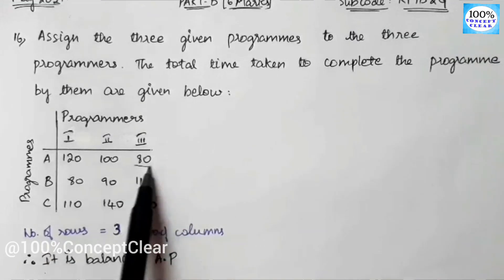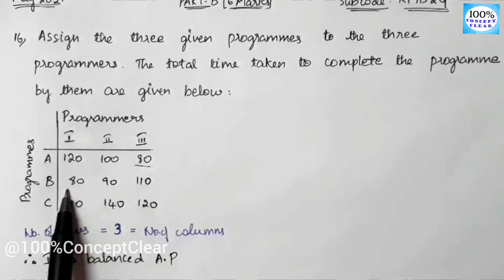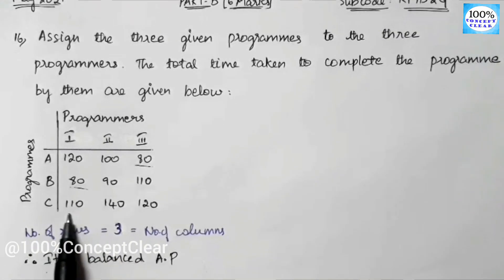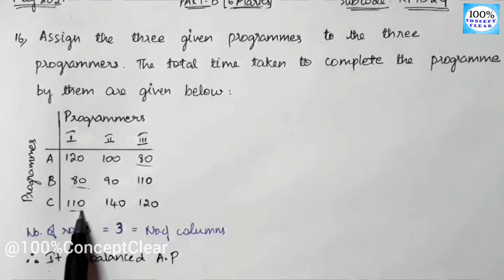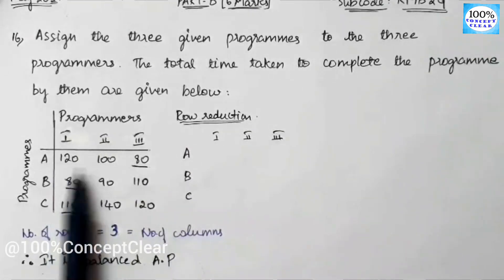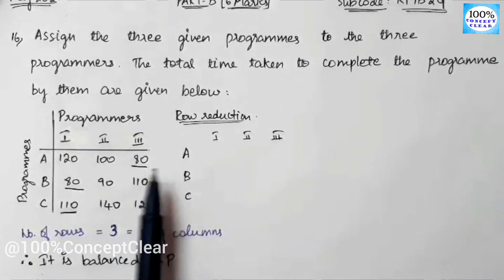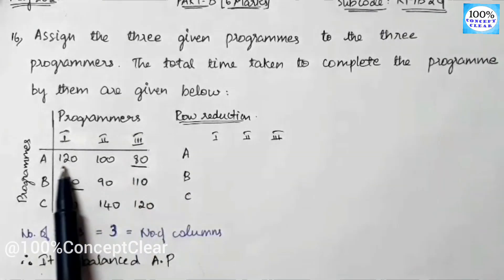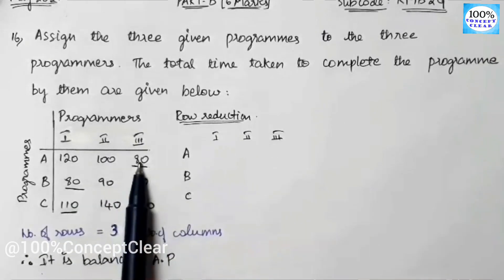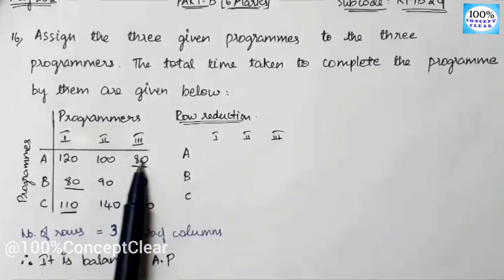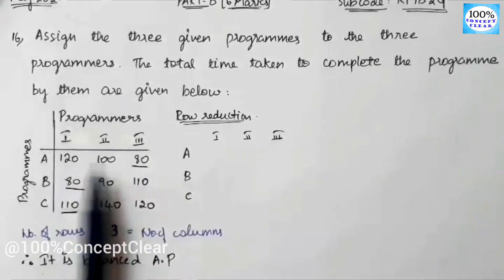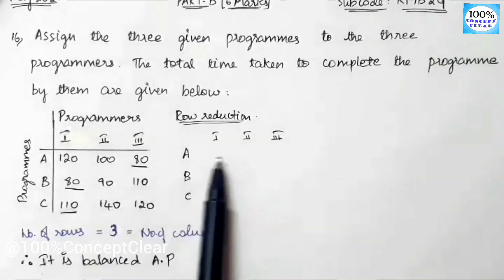For row reduction, we choose the minimum value row-wise. In the first row, the minimum value is 80. So: 120 minus 80 equals 40; 100 minus 80 equals 20; 80 minus 80 equals 0. Now for the second row, the minimum value is 80. So: 80 minus 80 equals 0; 90 minus 80 equals 10; 110 minus 80 equals 30.